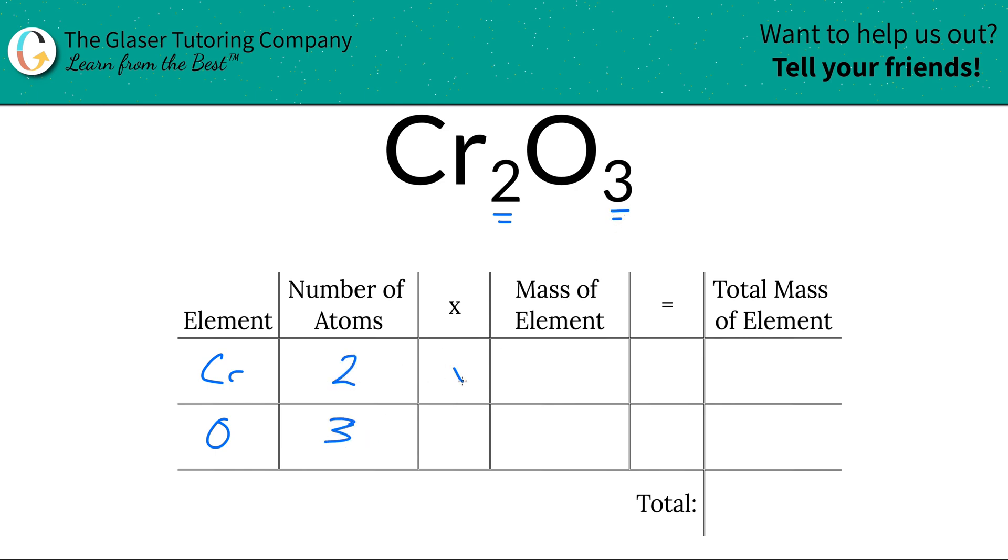Next we're going to take those number of atoms and multiply it by the mass of each particular element, which is found on the periodic table. So let's take a look.